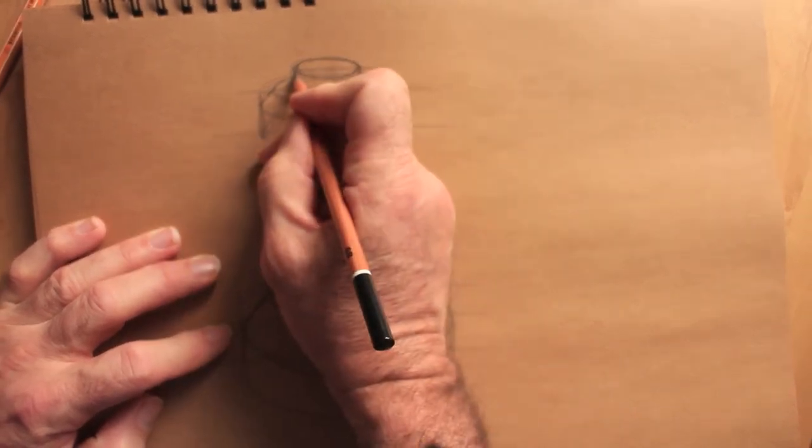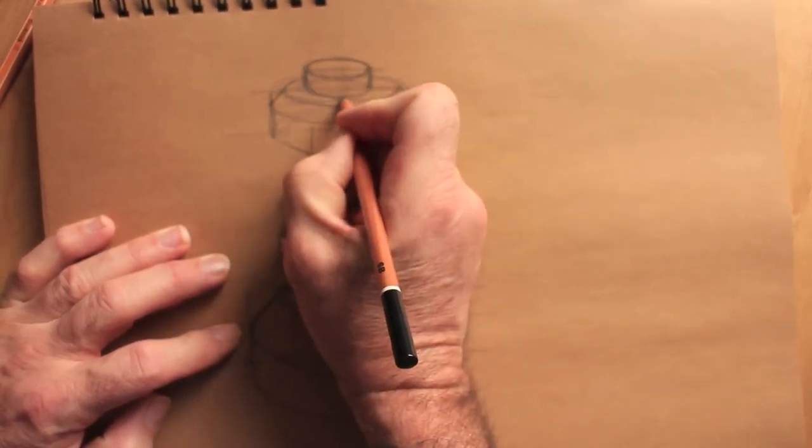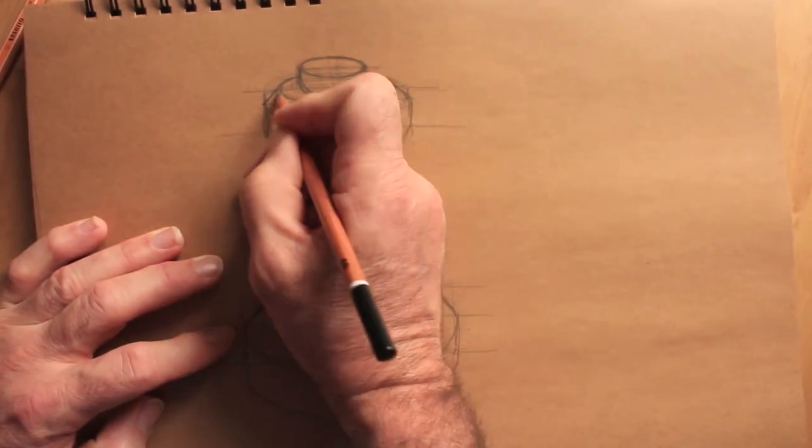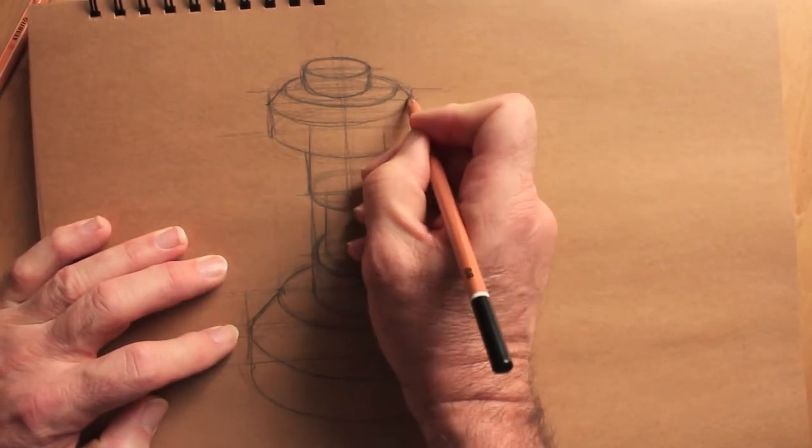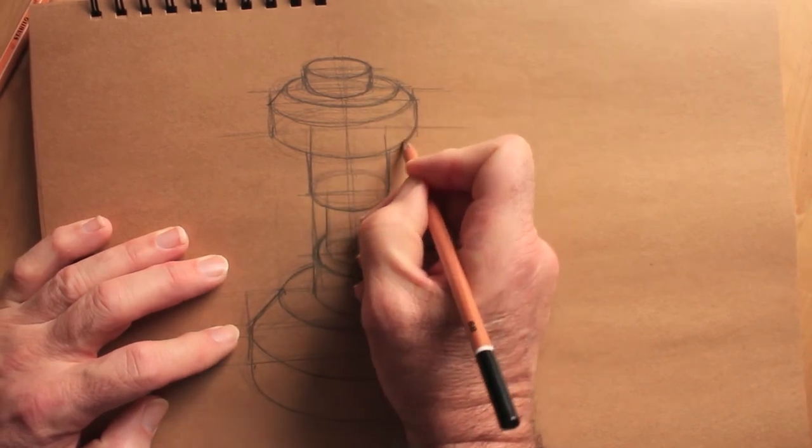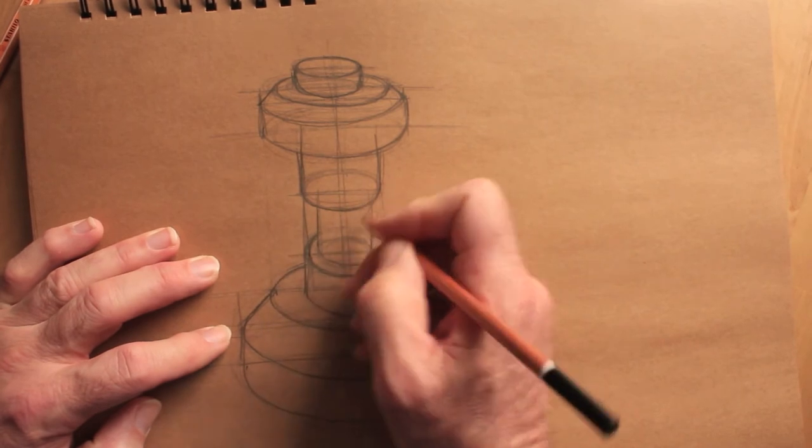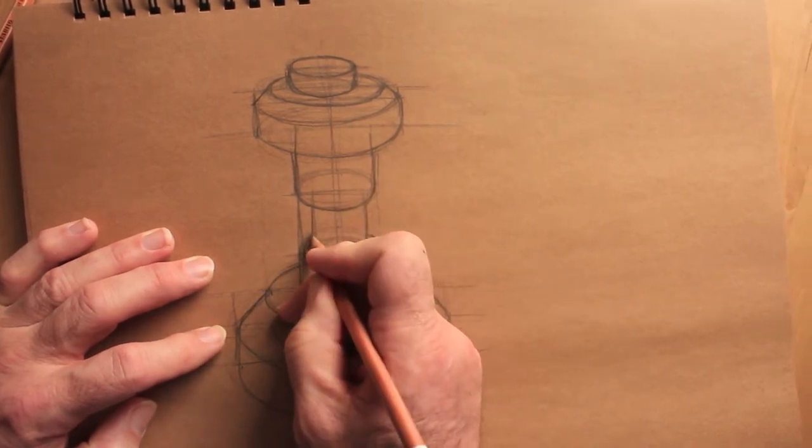To computer model something like this, this will probably take you the best part of £1,000 and 30 minutes. This has taken, I think, three and a half, four minutes to get to this stage. So as a quick communication skill, it's a fantastic skill to have and one which with practice becomes so much easier.